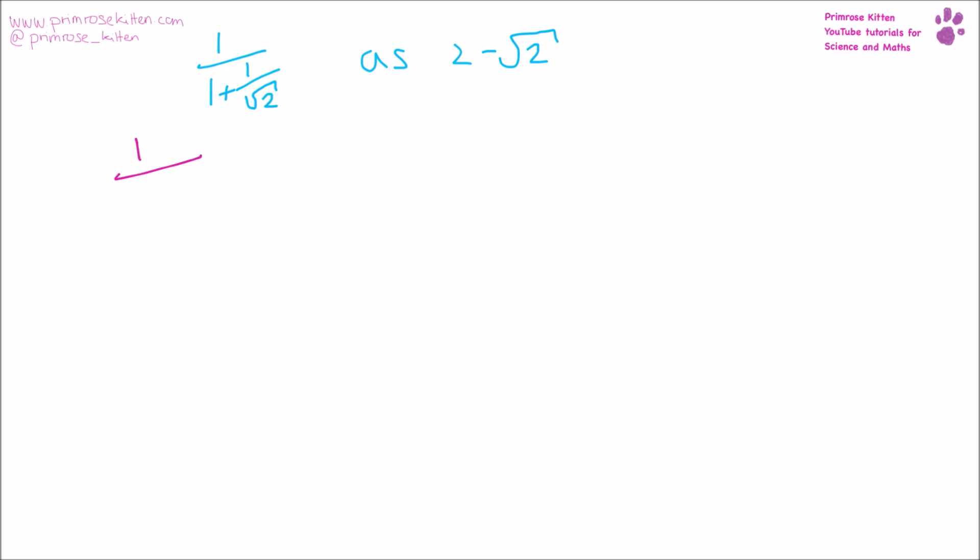So, one over one plus one over the square root of two. To make this look a little bit nicer, I'm just going to multiply it by one. So, the square root of two over the square root of two.